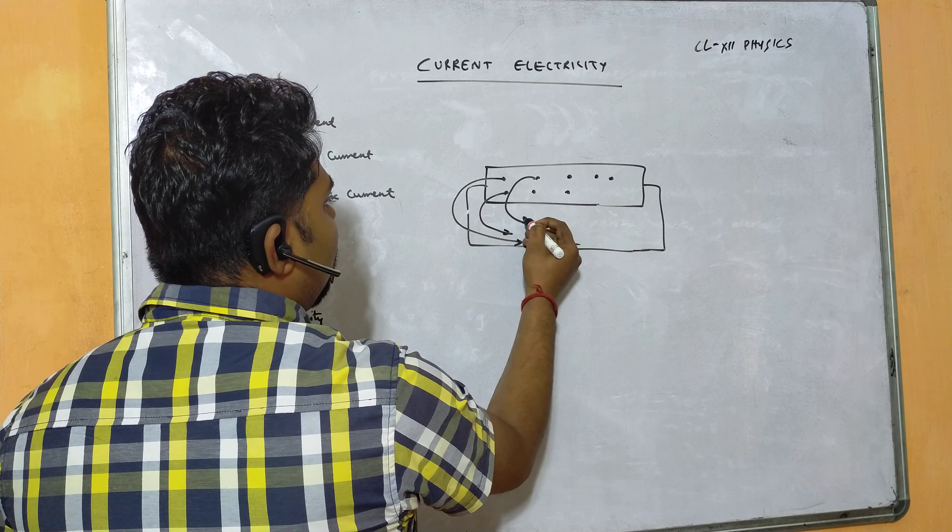Ohm's Law states that the flow of electric current through a conductor is directly proportional to the potential difference applied across its two ends, provided physical conditions like temperature and pressure remain constant. So I ∝ V, which gives V = IR, or R = V/I, where R is the resistance — the opposition to the flow of current.